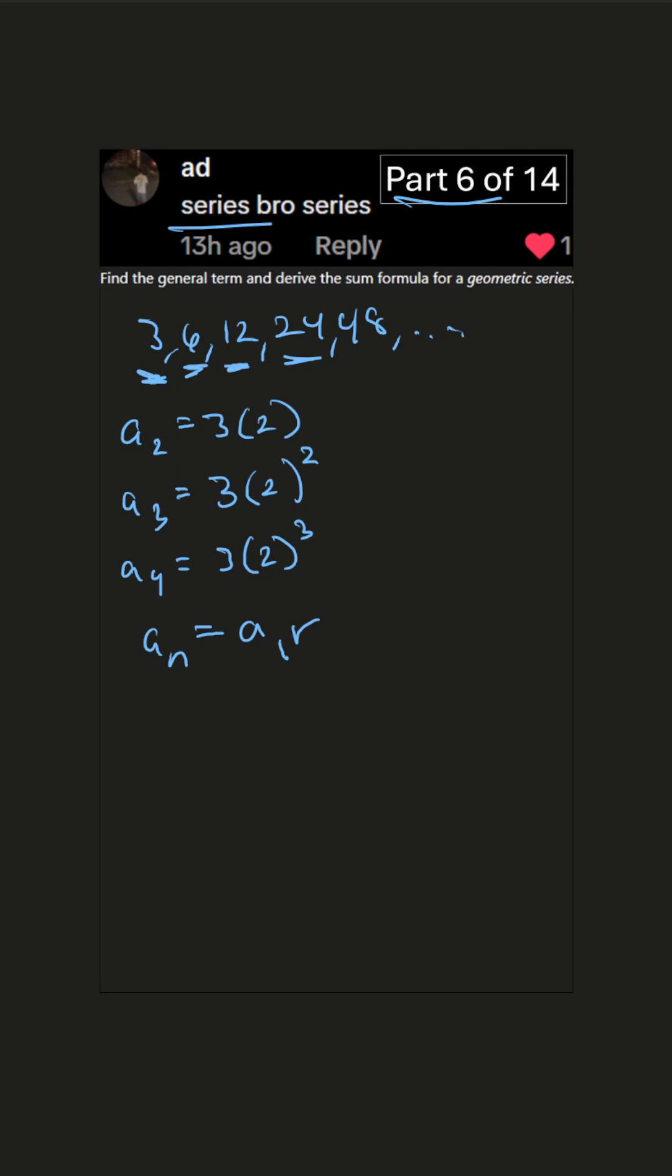And in this case r equals 2. That's this number that we're multiplying more r's each time. So times r to the n minus 1. What does that mean if we're